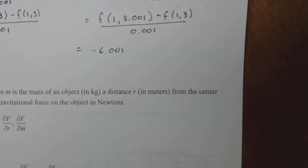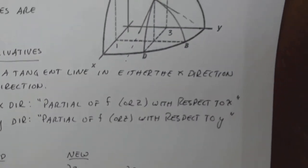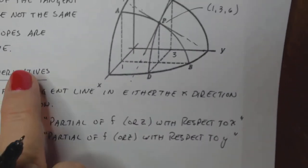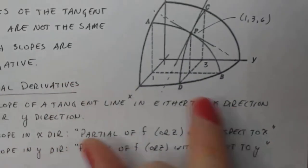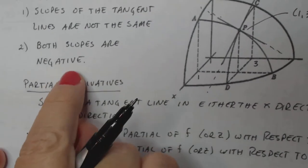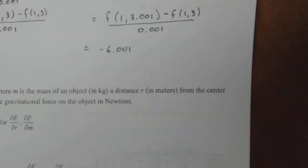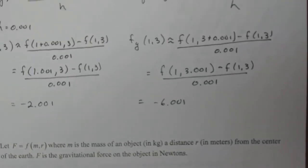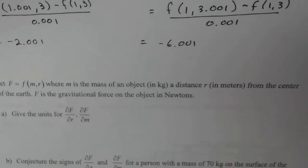When we first did this problem on the first page, we mentioned that both slopes are negative, and our estimations came out with both slopes being negative — so we're probably on the right track. Now let's try problem number two.